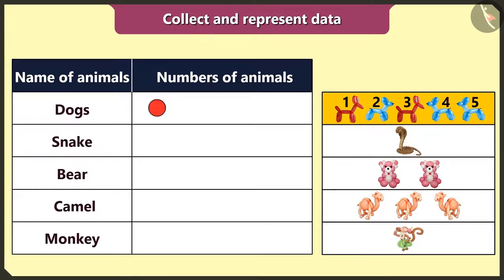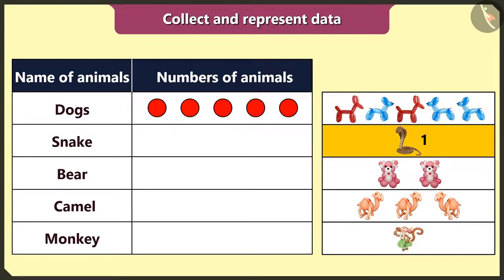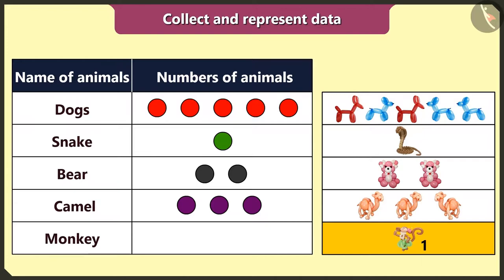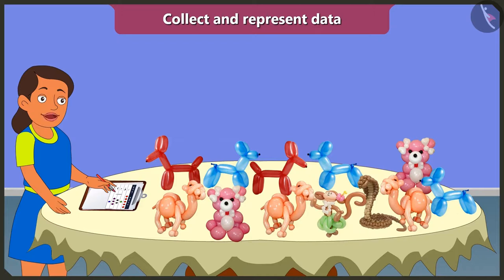There are five dogs, so five circles. One snake, so one circle. Two bears, so two circles. Three camels, so three circles. And one monkey, so one circle. Wow, by representing data like this I can easily remember so much information!